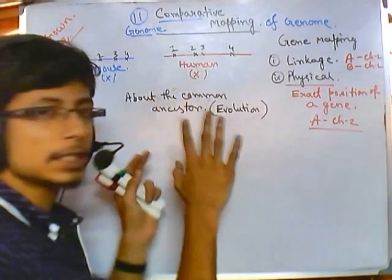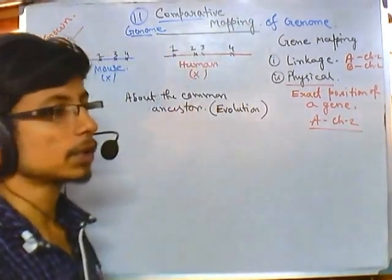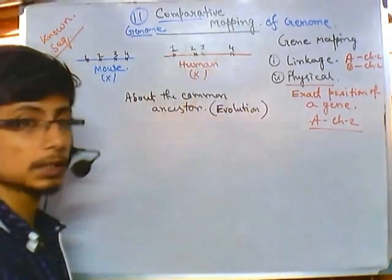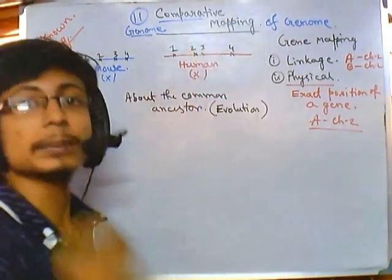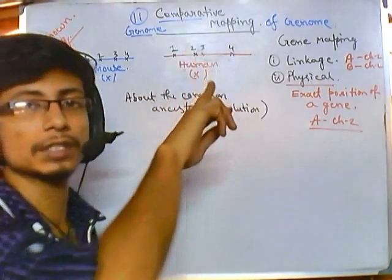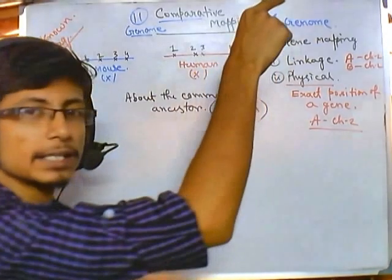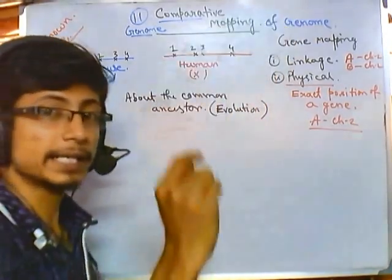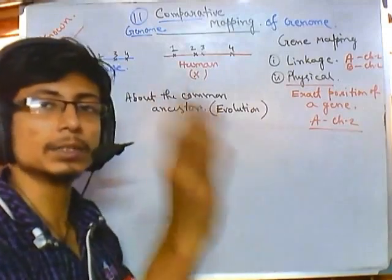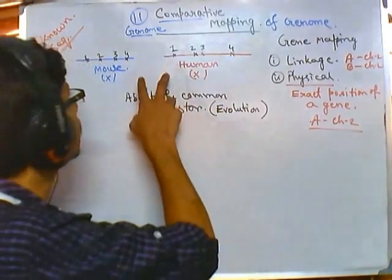If there is any sequentiality change — for example, if we get 1, 2, 4, 3 — we can tell there is a sequence swap, a swapping of a gene segment. If we get genes 1, 2, 3 but instead of gene 4 we find gene 5, then we can tell that gene 4 is misplaced and substituted with the new gene 5. We can derive these conclusions depending upon the comparison.